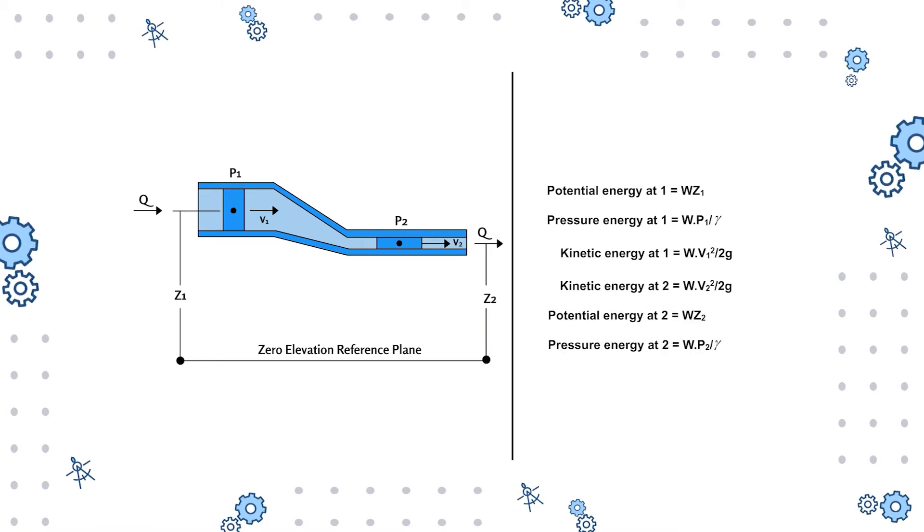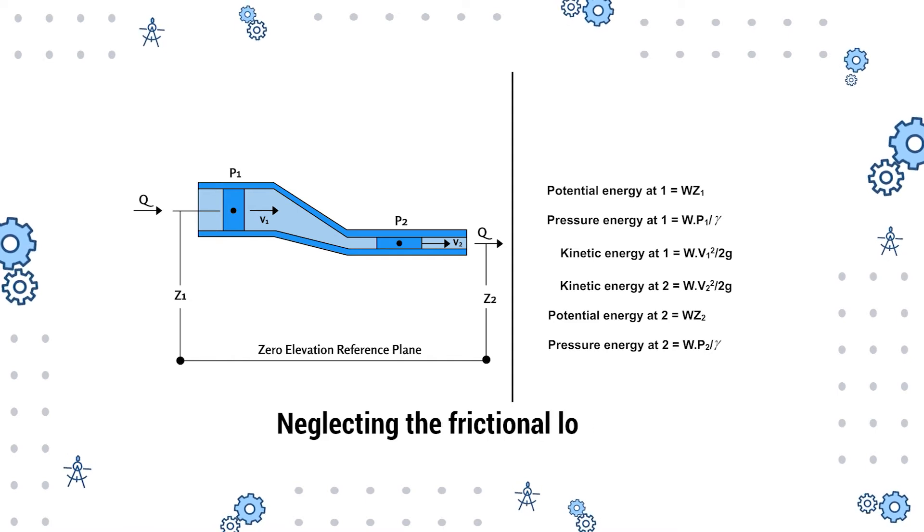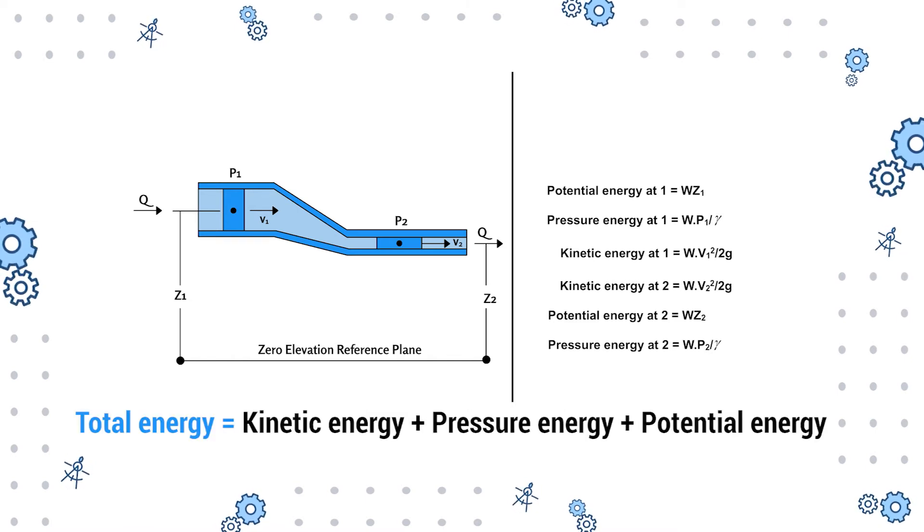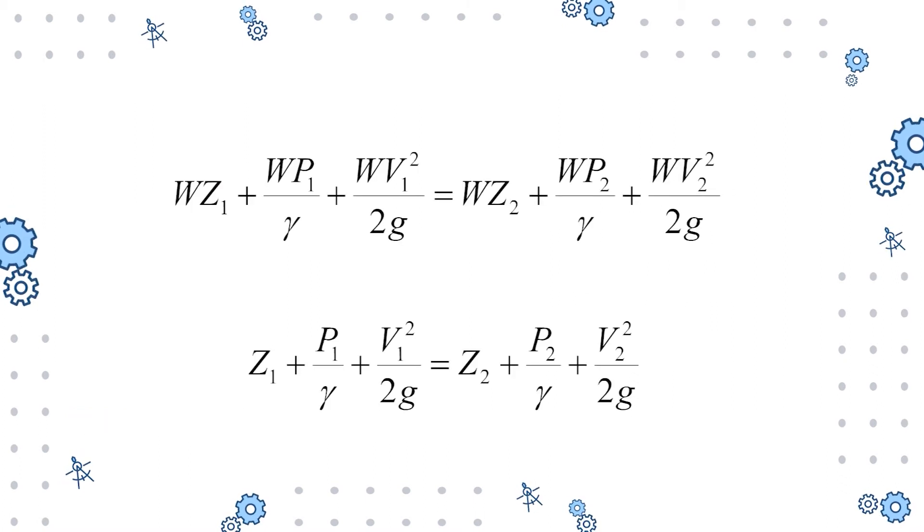Therefore, if the frictional losses are neglected, then the total energy of the fluid including the kinetic, pressure, and potential energy at point one is equal to the total energy at point two. This equation is called Bernoulli's equation.